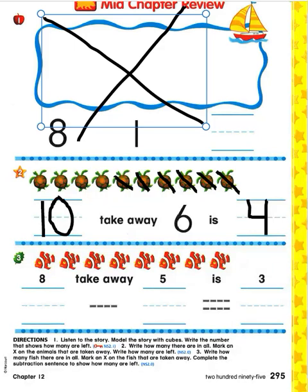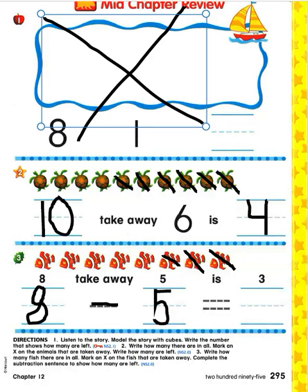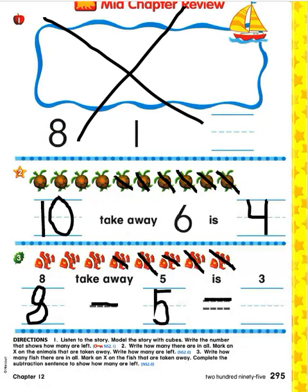Number three. We have a subtraction sentence that's written out in words, but we need to write it in numbers. It says eight take away five is three. Let's write an eight on the first handwriting line, then do a subtraction sign for the words take away. Write a five on the next handwriting line to show how many we are taking away, and cross off five fish. Eight take away five — go ahead and trace over the equal sign — and write a three on the last handwriting line to show that three are left over. One, two, three — eight take away five is three.